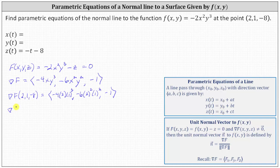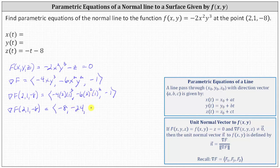Simplifying, the gradient of F at the point (2, 1, -8) is: x-component = -8 × 1³ = -8; y-component = -6 × 4 × 1 = -24; and z-component = -1.